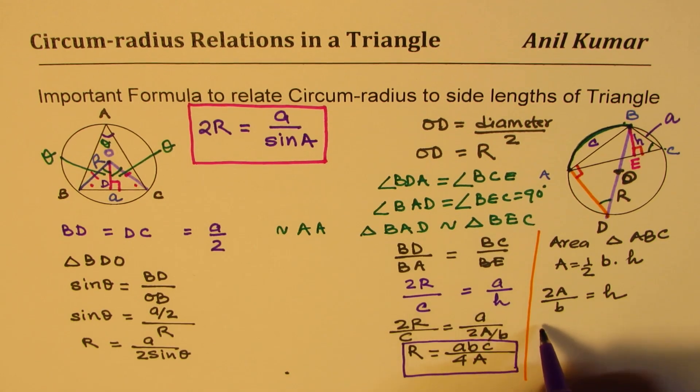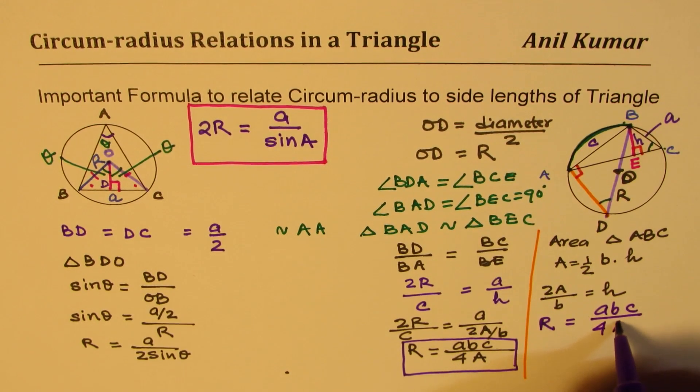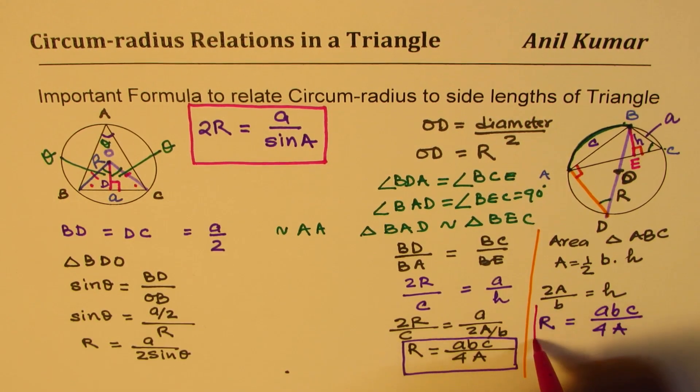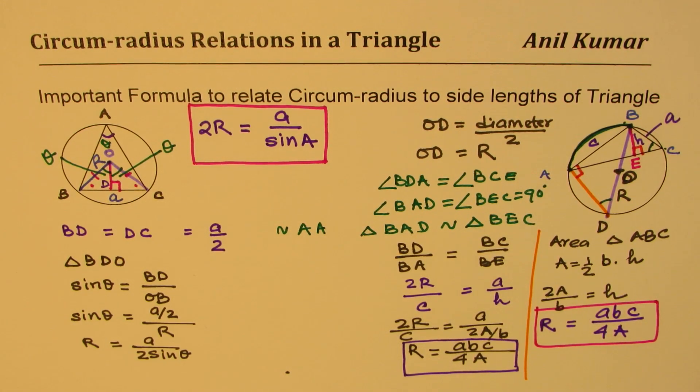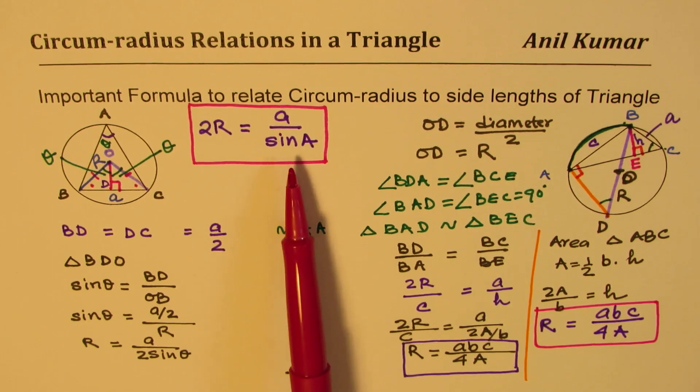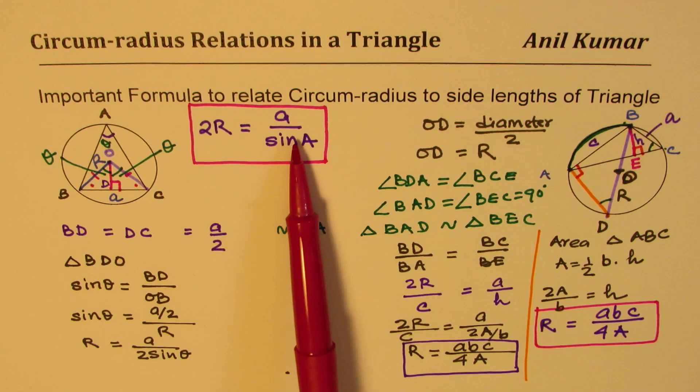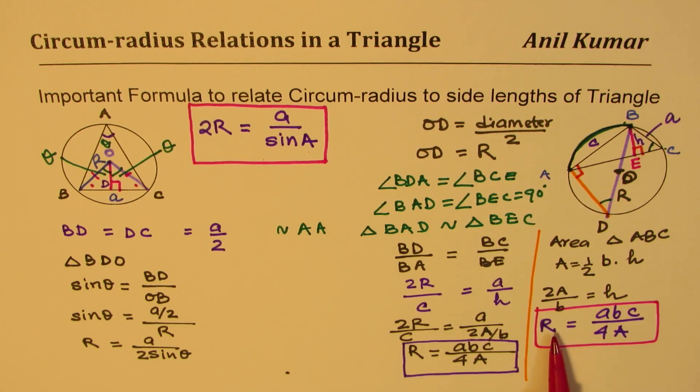That's the second formula, which we should remember. Radius R equals the product of all the three sides divided by 4 times the area. These are two very important formulas to find the circum-radius when solving questions related to triangles and circles. I hope their derivation is absolutely clear and it's easy to remember that twice the radius is a over sine a. That is a sine law kind of portion. In this case, radius equals the product of all the three sides divided by 4 times the area.